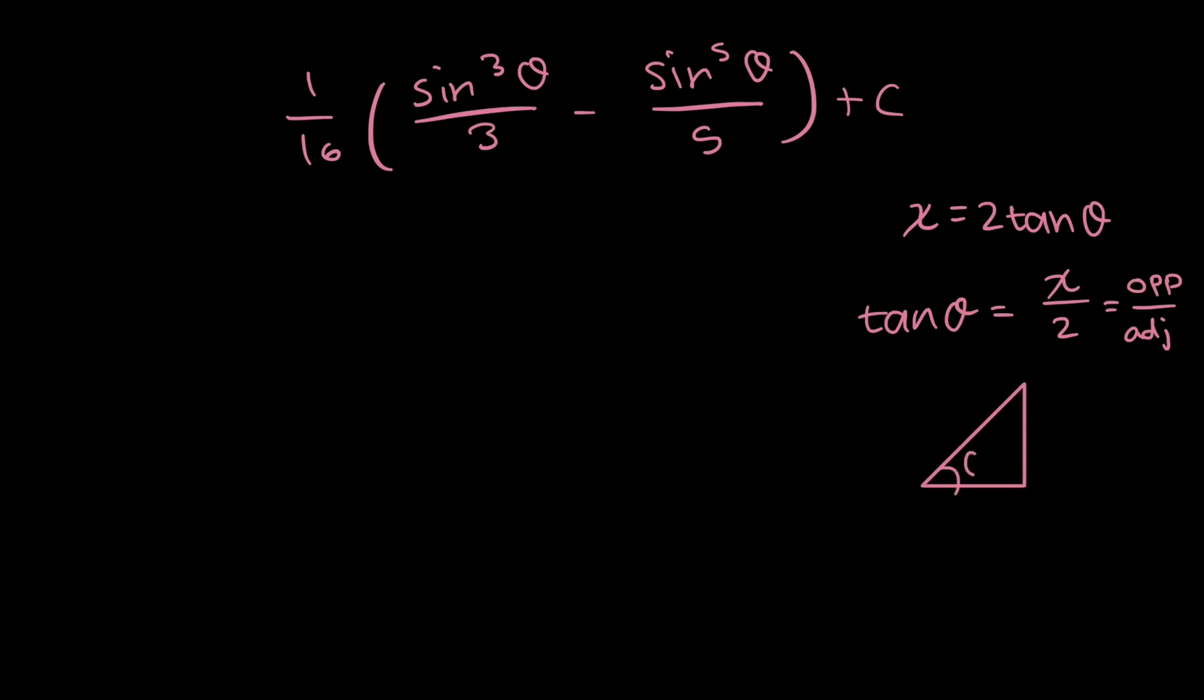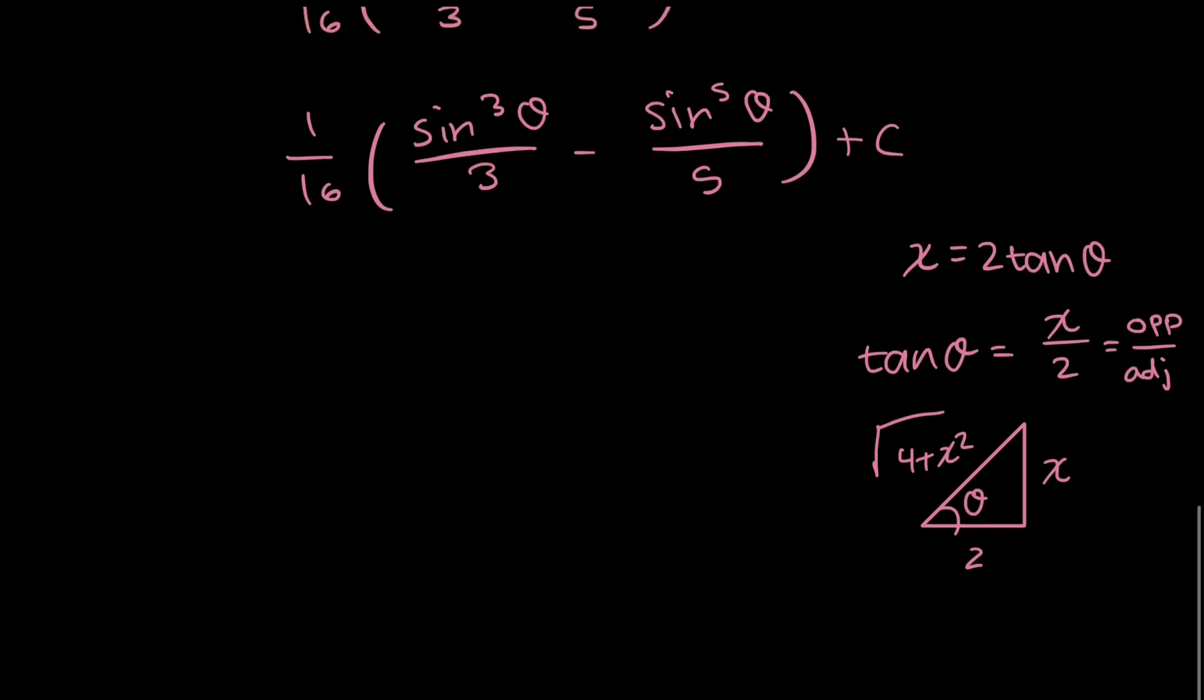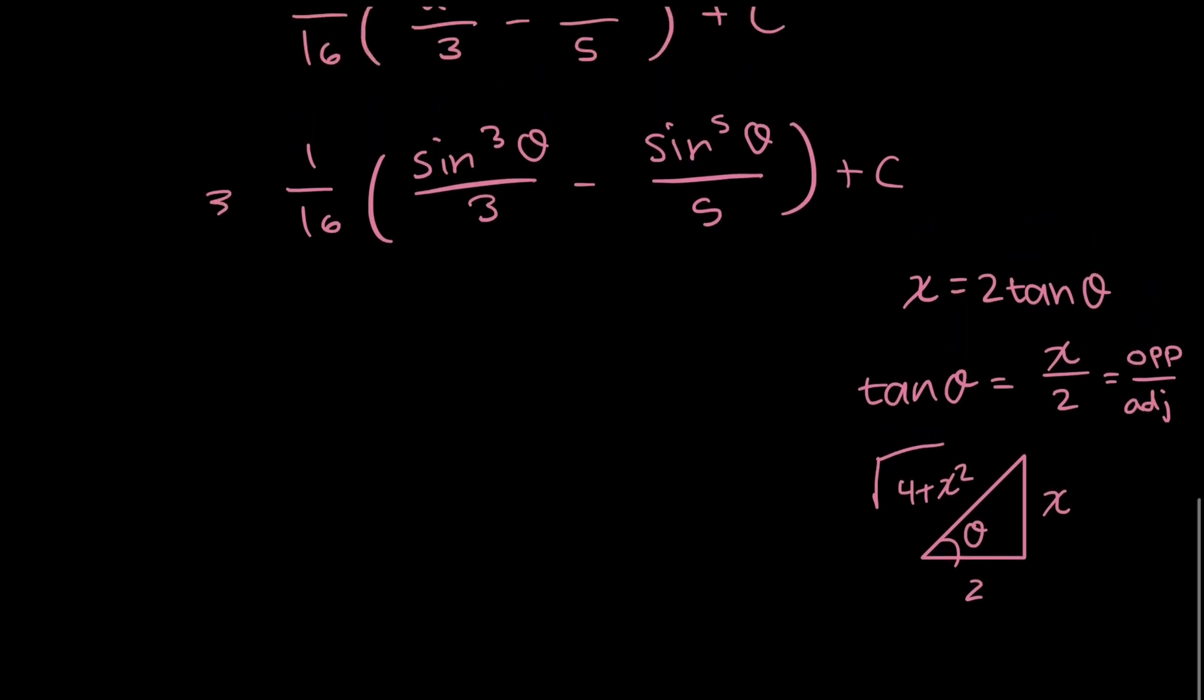So let me construct a quick triangle. If this is my angle theta, then my opposite is going to be equal to x. And my adjacent side is going to be equal to 2. So that my hypotenuse is equal to 4 plus x squared. The reason I'm doing this is so that I can rewrite my answer over here, but in terms of x.